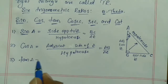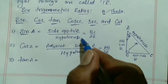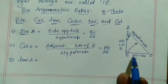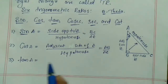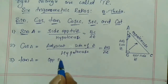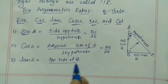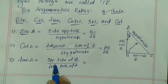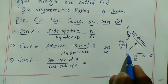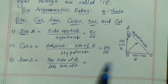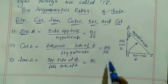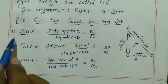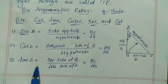Tan A does not involve the hypotenuse. Tan A equals the opposite side of angle A divided by the adjacent side of angle A — that is BC divided by AB. So we now have sine A, cos A, and tan A ratios.